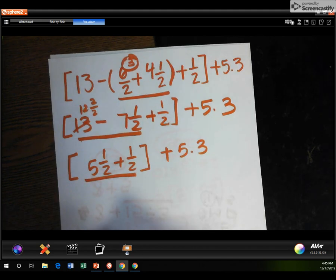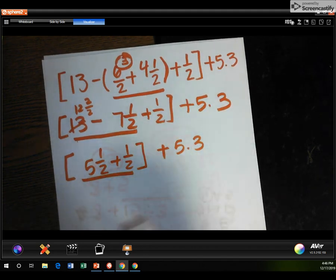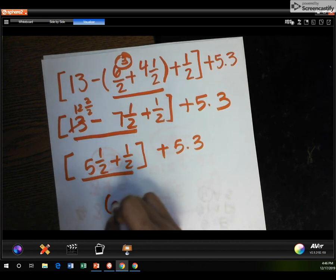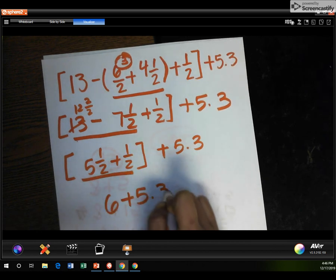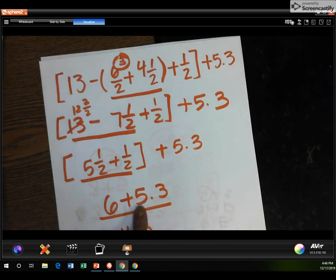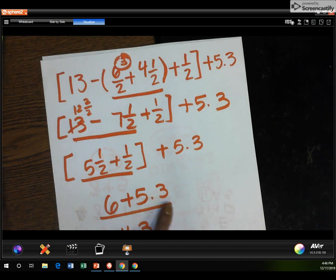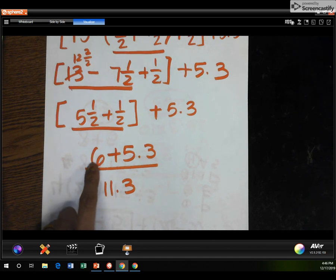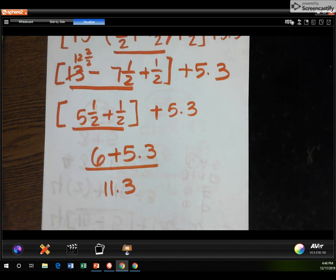So that will be 6 wholes. And then you got 5 and 3 tenths. And then if I finish that, that will be 11 and 3 tenths. This will not be 5 and 9 tenths because you have to line up decimal point, right? Because you gotta make it to 6.0. And that will be 11 and 3 tenths.